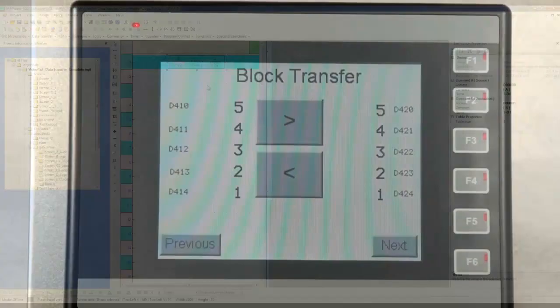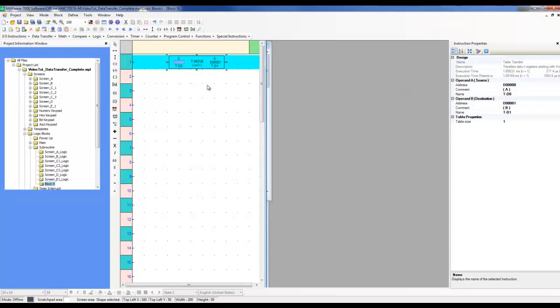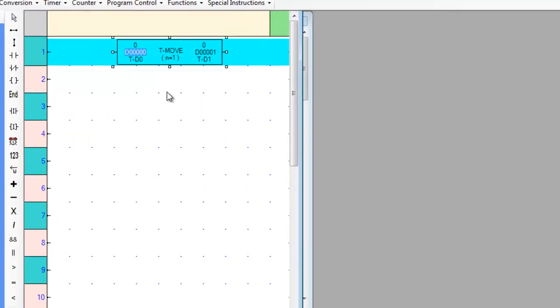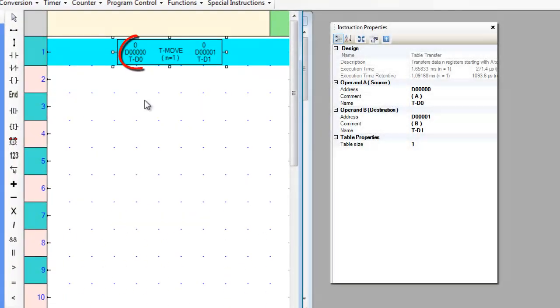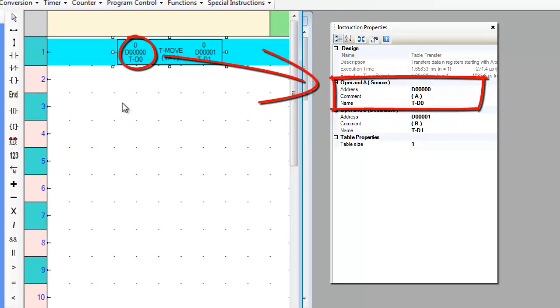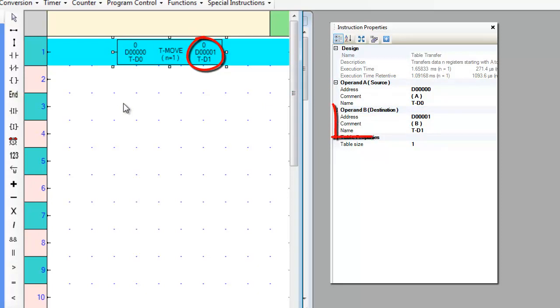Now, going back to the ladder logic block, as you can see, a table is defined on the left hand side or operand A or source. A table is also defined on the right hand side or operand B or the destination.